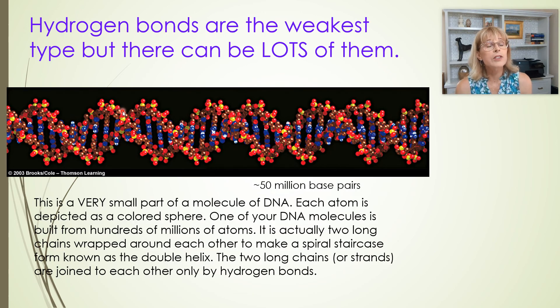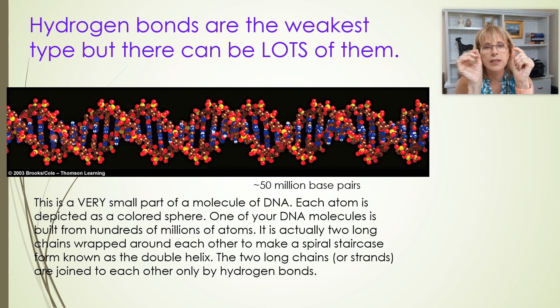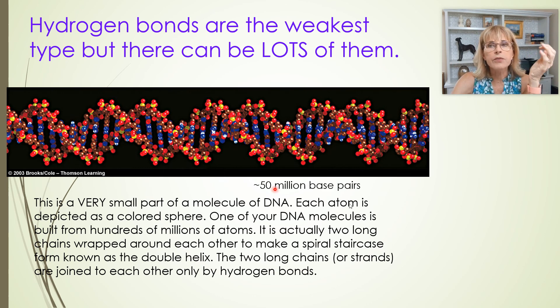Remember that hydrogen bonds, they're the weakest type, but there can be lots of them. And a good example is DNA. This is a teeny, teeny, tiny bit of DNA. How small a bit? Well, one of your chromosomes of DNA can have 15 million base pairs. How big is this snippet? This is a base pair.